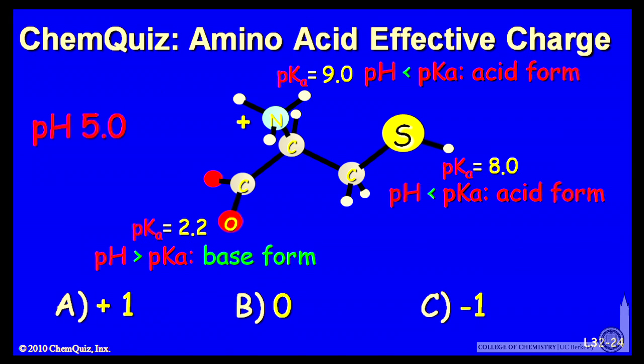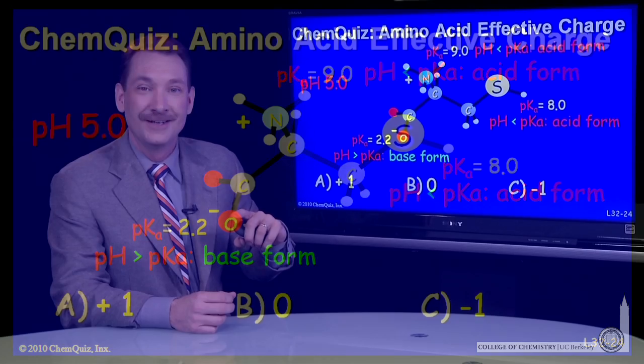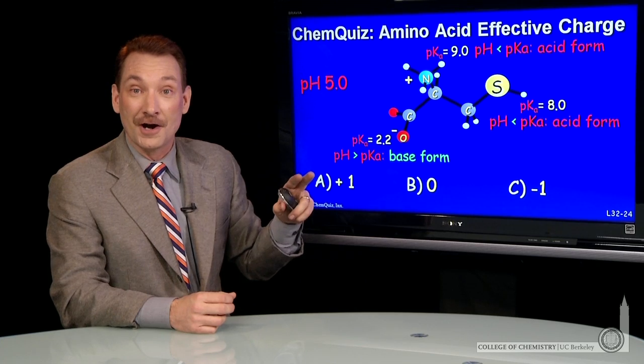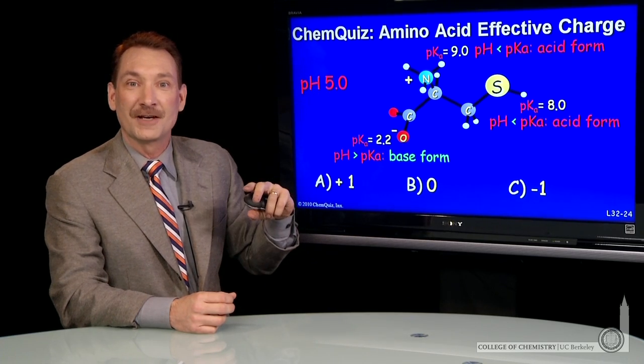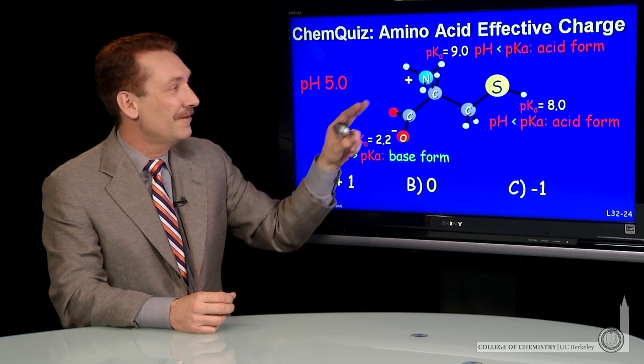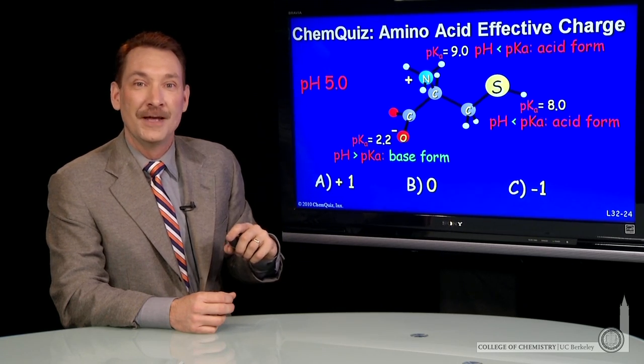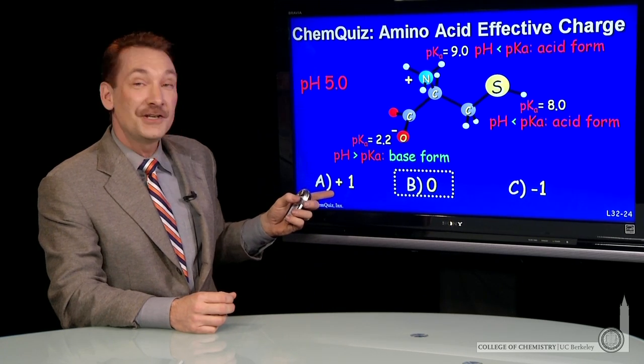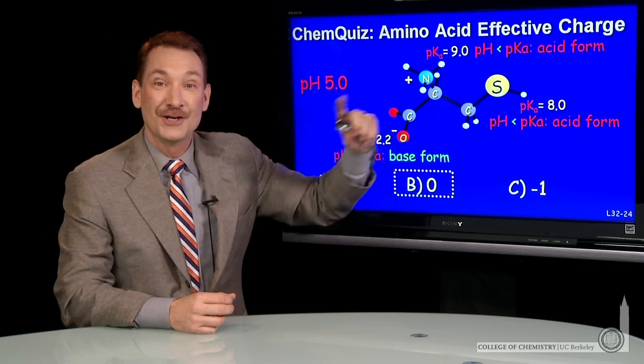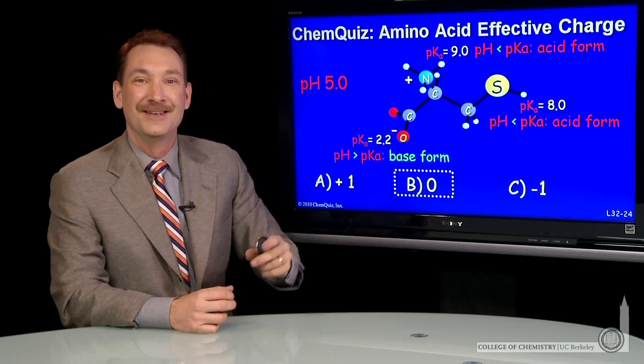When I lose that proton, of course, I leave behind a negative charge. So the overall charge on the molecule is determined by the negative charge at pH 5 on the carboxylic acid group and the positive charge at pH 5 on the ammonium group. So in this case, the overall charge is 0, minus 1, plus 1, and 0, all sum to 0.